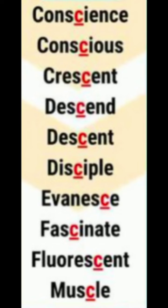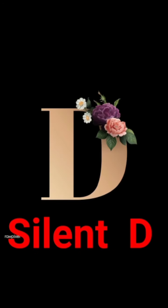Silent C — it is a consonant. This is a very common and easy rule: before C, you always find S, and it is pronounced without the C sound. Examples: conscience, conscious, crescent, descend, disciple, fascinate, fluorescent, muscles.